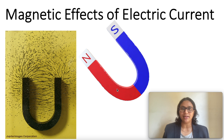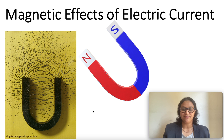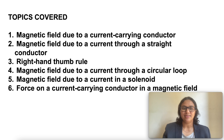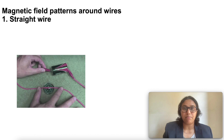In the last class, during an activity, we saw that an electric current through a metallic conductor produces a magnetic field around it. The topics covered during this session are: magnetic field due to a current carrying conductor, magnetic field due to current through a straight conductor, right hand thumb rule, magnetic field due to current through a circular loop, magnetic field due to a current in a solenoid, and force on a current carrying conductor in a magnetic field.